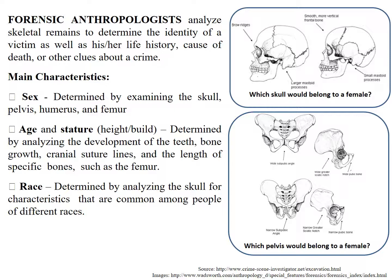The main characteristics they can determine is the sex. They can determine this by looking at the skull, the pelvis, the humerus, and the femur. The skull is your head, your pelvis is your hips, your humerus is the long bone in the upper part of your arm, and your femur is the long bone in the top of your leg.